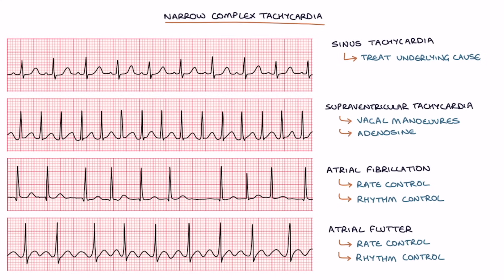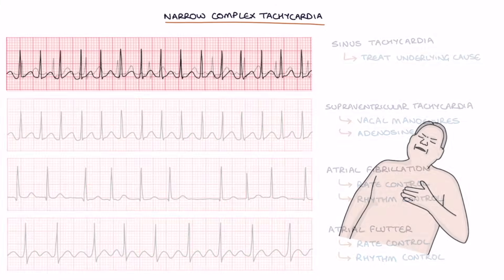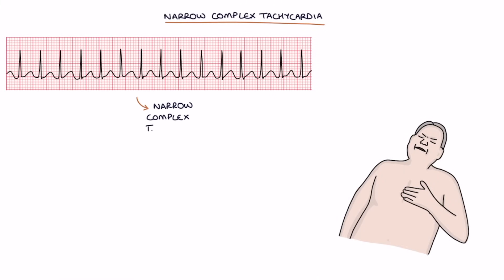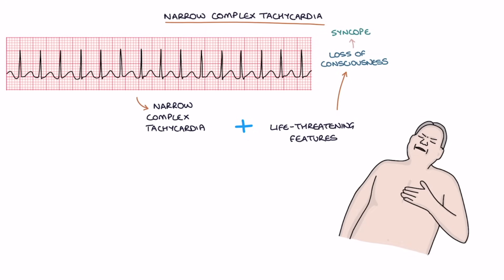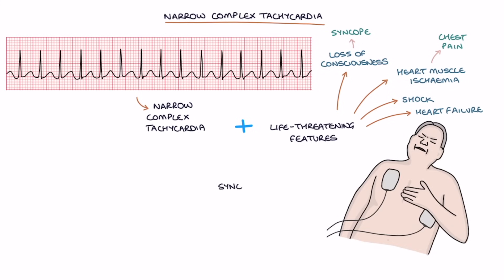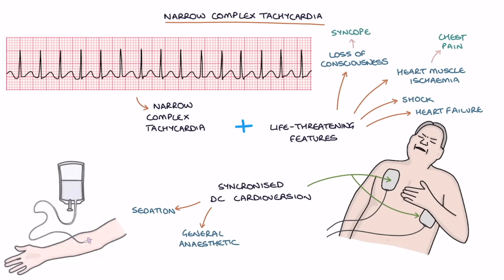We'll talk in more detail about atrial flutter later. Patients with a narrow complex tachycardia with life-threatening features — such as loss of consciousness or syncope, heart muscle ischemia, shock, or severe heart failure — are treated with synchronized DC cardioversion under sedation or a general anesthetic. Intravenous amiodarone is added if the initial DC shocks are unsuccessful.